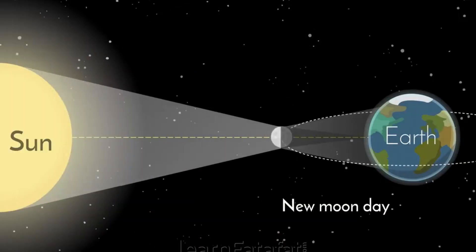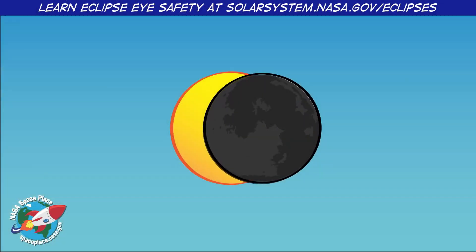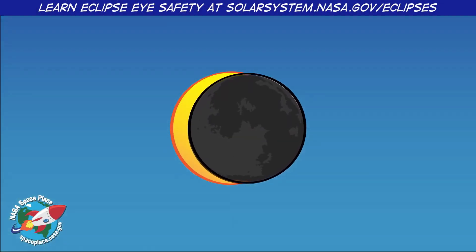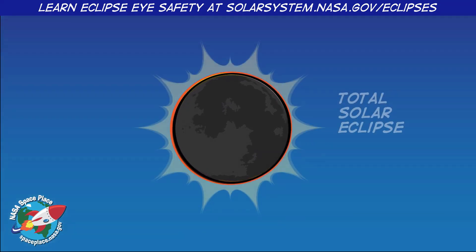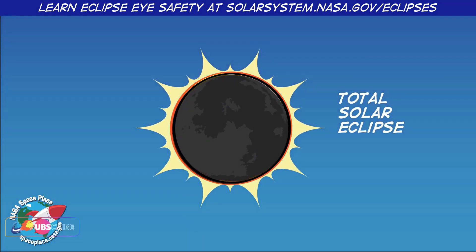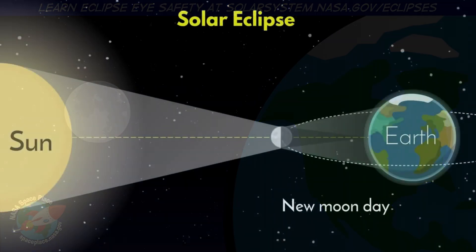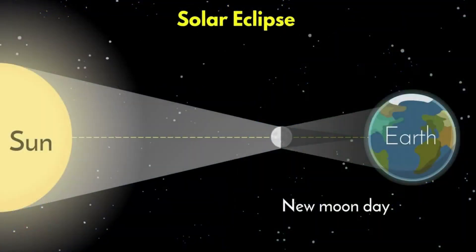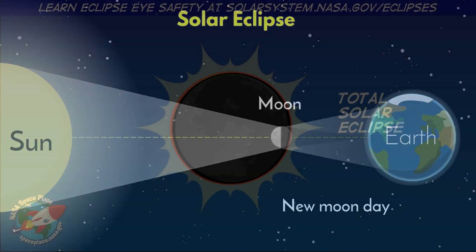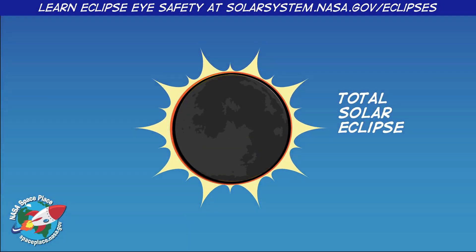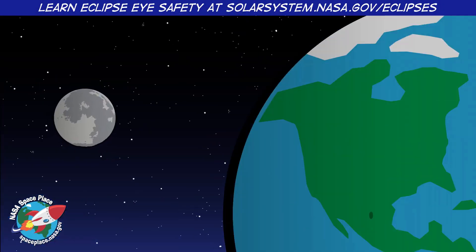During a total solar eclipse, the moon's umbra falls on a small area of the earth's surface, while the penumbra falls on a larger area. The occurrence of a solar eclipse depends on the alignment of the sun, moon, and earth. The moon's orbit around the earth is tilted at an angle of about 5 degrees, so it doesn't always align with the sun and the earth. If the alignment is perfect, the moon will block the sun's light and create a total solar eclipse.